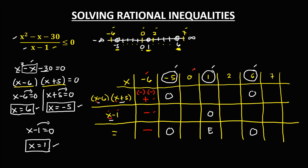Then for x equals 0: so 0 minus 6, that's negative 6, this one is negative, and 0 plus 5, that's positive 5, so this one is positive. Negative times positive — this one is negative. Then for the denominator, 0 minus 1, that's negative 1, so this one is negative. Then negative divided by negative — same sign — the result is positive.